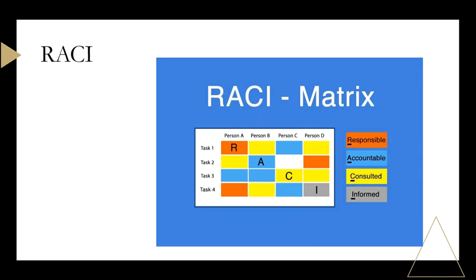The consulted person is someone you need to consult — you tell them: we started this activity and we have completed it, this is what we achieved. Informed are basically your stakeholders who need to know the progress on a specific task — whether it is completed, incomplete, or whether there are any issues.